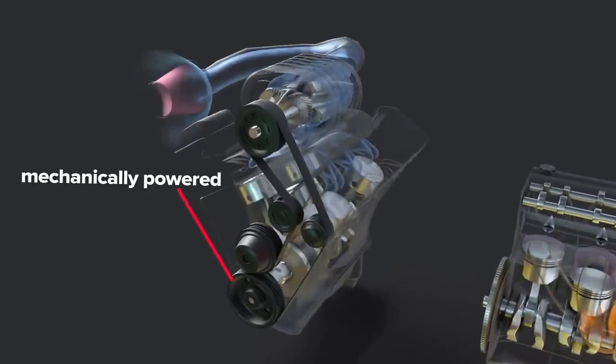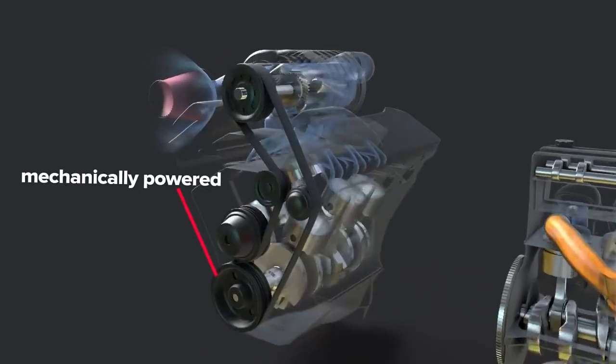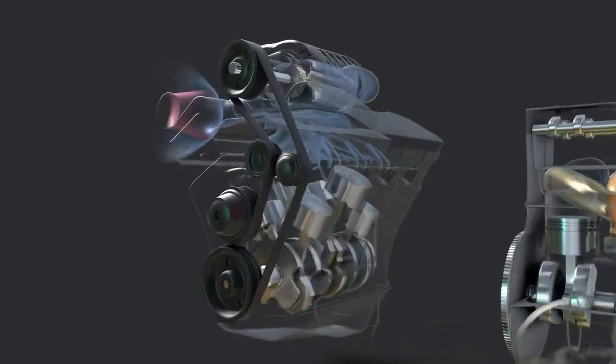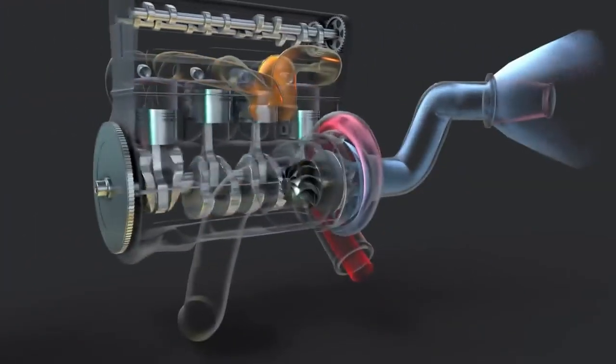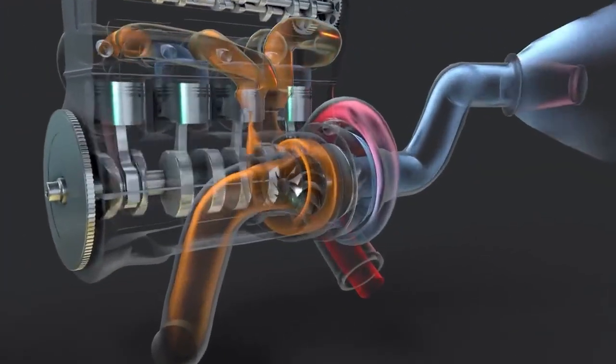Superchargers are mechanically powered, often by connection to the engine crankshaft, while turbos are powered by engine exhaust gas.